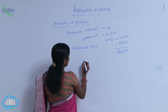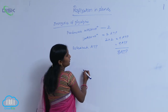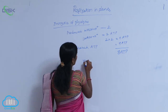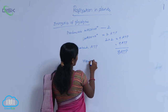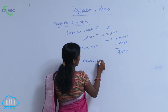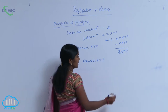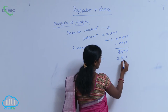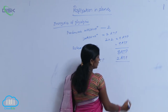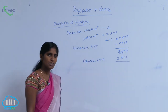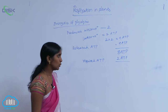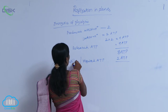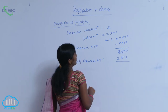But how many ATPs are required for glycolysis? The required ATPs are two — used in the first reaction and third reaction of glycolysis. So the utilized ATPs are two.